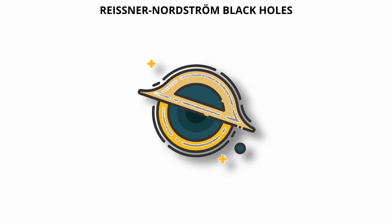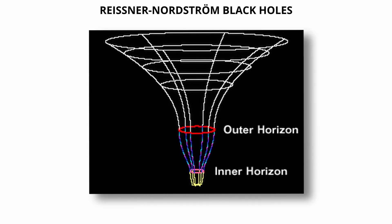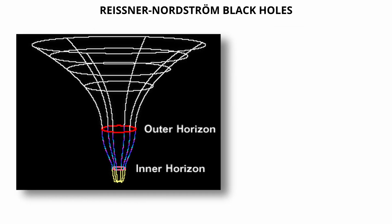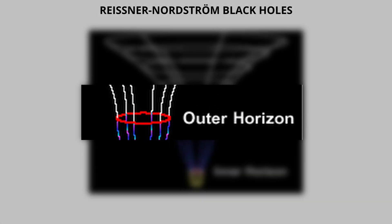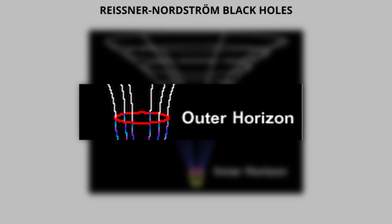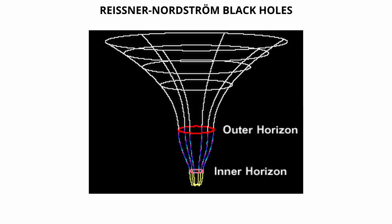The addition of electric charge alters the black hole's structure. Instead of having just one event horizon, a Reissner-Nordstrom black hole features two: an outer event horizon and an inner Cauchy horizon. The outer horizon functions like the event horizon of any black hole. Crossing it means no return.